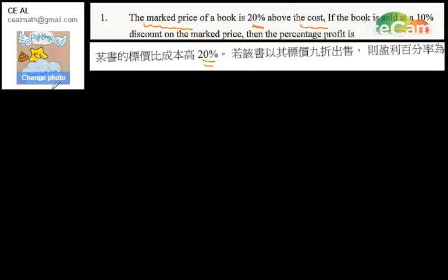Hello, today we are here to learn how to calculate the percentage of profit. For this question, imagine that the marked price of a bow is 20% above the cost. And if the bow is sold at a 10% discount on the marked price, then what is the percentage of the profit?